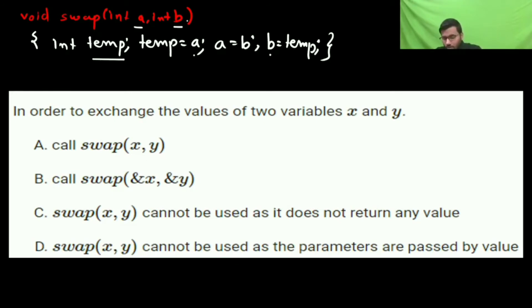So it is call by value. It is not a pointer. So in the copy of A and B it will get interchanged. But the X and Y, those who are calling, their values will not change.